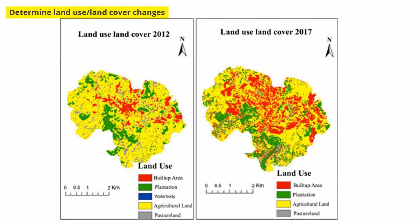The next topic is determining land use and land cover changes. Land cover refers to the features covering the earth's surface, while land use refers to areas utilized for a particular purpose. The role of GIS in land use and land cover applications is that we can determine land use and land cover changes in different areas, detect and estimate changes in land use and land cover patterns over time.